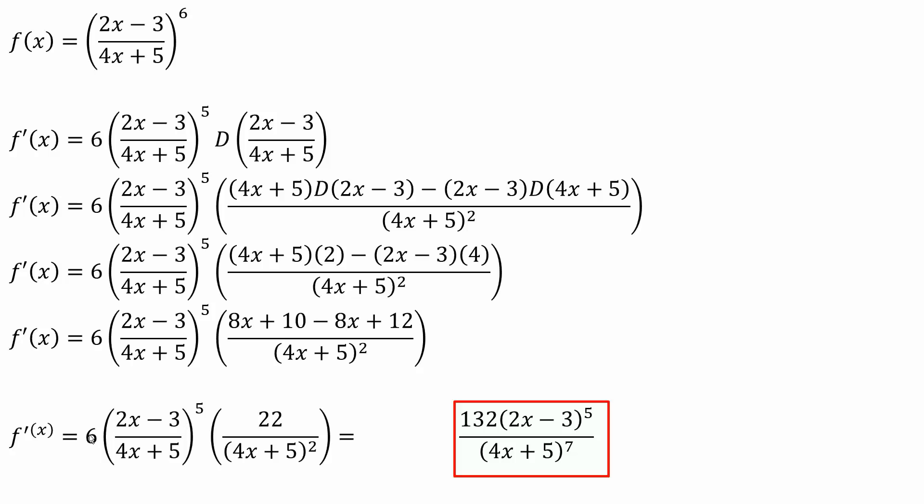Finally, 6 times 22 is 132 times 2x minus 3 raised to the fifth. I'm kind of splitting because here you have 4x plus 5 squared, and here you have 4x plus 5 raised to the fifth. So the denominator would be 4x plus 5 raised to the seventh, since 2 plus 5 gives us 7. This is our final answer. That's all we need to do for this type of problem.